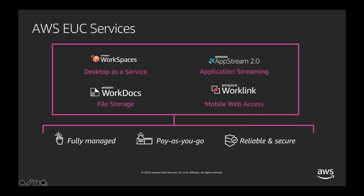Our end-user computing services give you the flexibility and agility to respond to changing needs — pay-as-you-go, reliable, and secure. Our flagship service is Amazon Workspaces, our desktop-as-a-service offering, which provides managed access to Windows as well as Linux-based desktops. Amazon AppStream 2.0 is our application streaming service that lets users access distinct applications on demand over a browser or client app. Amazon WorkDocs is our enterprise file share and sync service. Amazon WorkLink is our fully managed service allowing employees to access secure internal websites using mobile devices.